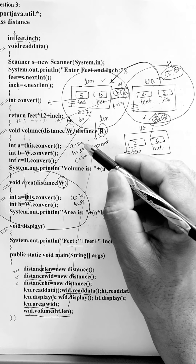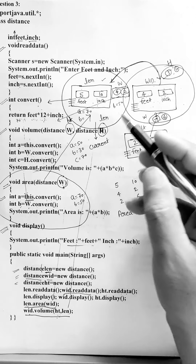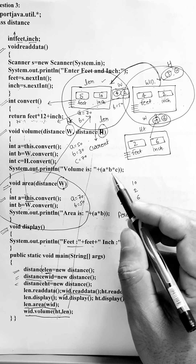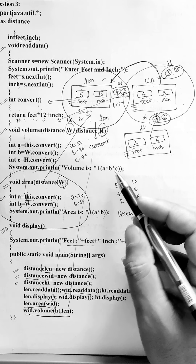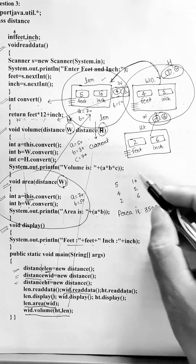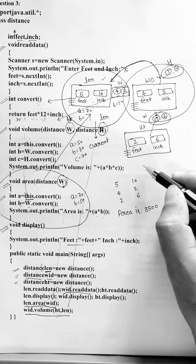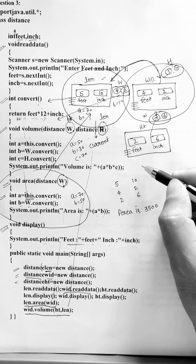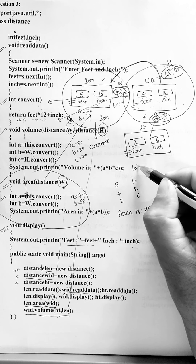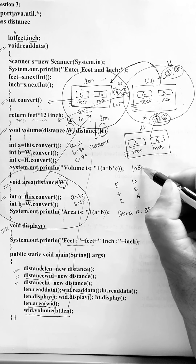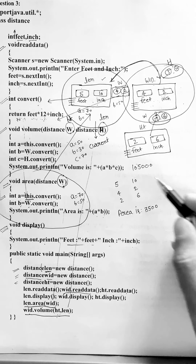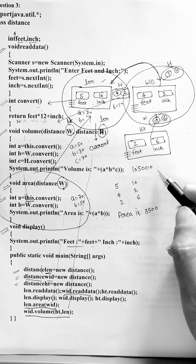This is how we got the three values. Now we calculate volume = a * b * c = 50 * 30 * 70. The answer is 105,000 inch cube.